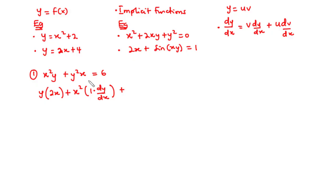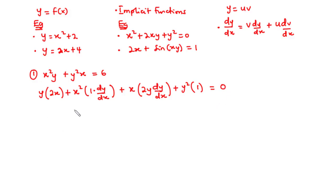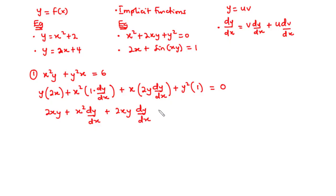Next, for y squared x, we hold x and differentiate y squared, which gives 2y, then multiply by dy/dx. Then we hold y squared and differentiate x, which gives 1. The derivative of the constant on the right is 0. Simplifying, we have: 2xy plus x squared dy/dx plus 2xy dy/dx plus y squared equals 0.